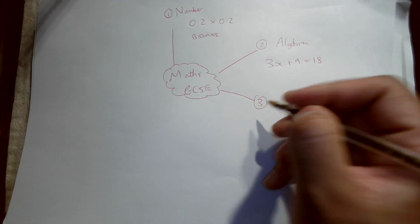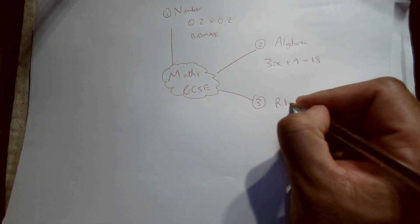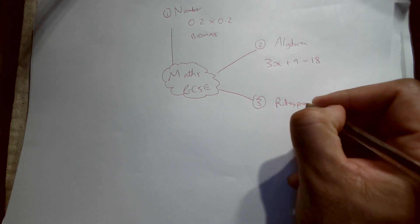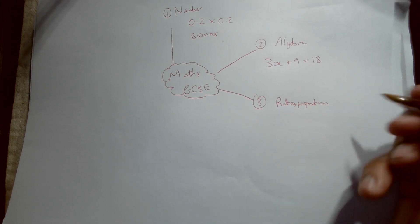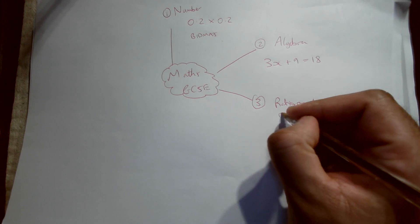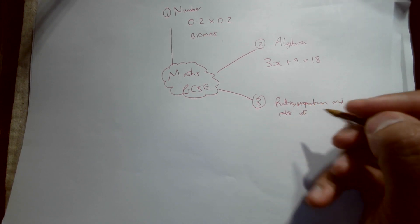The third area is ratio, proportion, and rates of change.